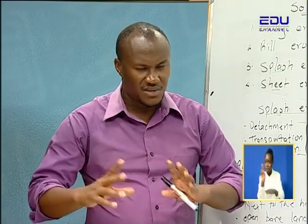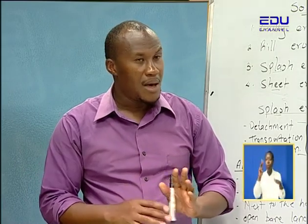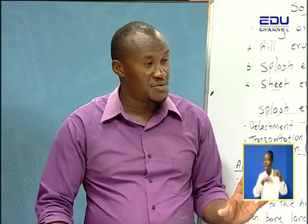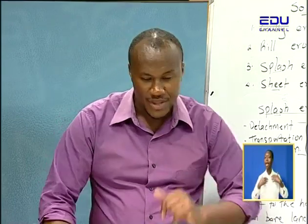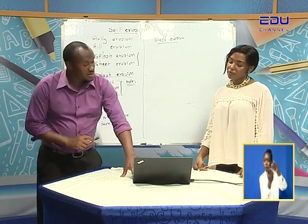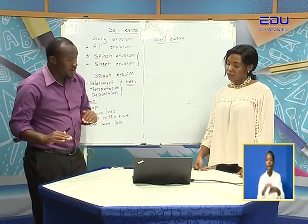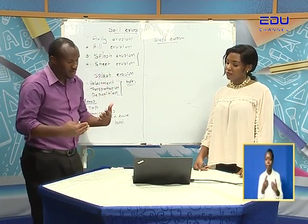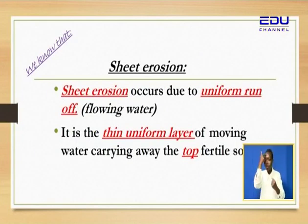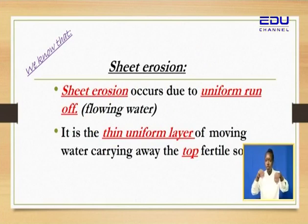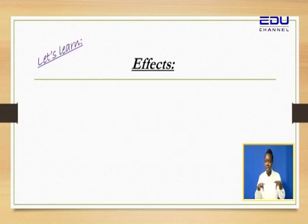Fertilizers are chemicals, but no matter how much compost manure you put, the soil is going to be very healthy. So sheet erosion occurs due to uniform runoff — it is the thin uniform layer of moving water carrying away the top fertile soil.